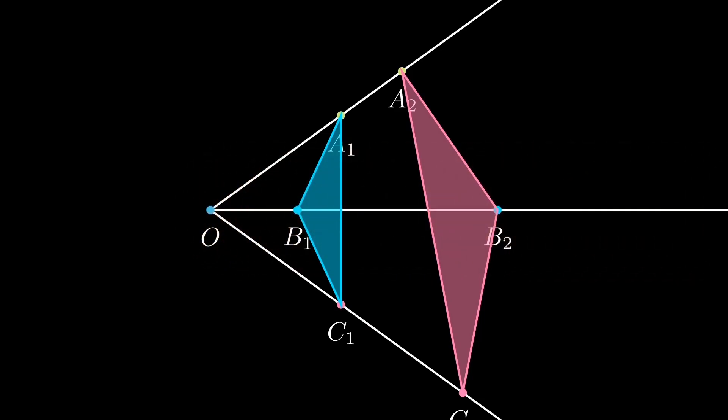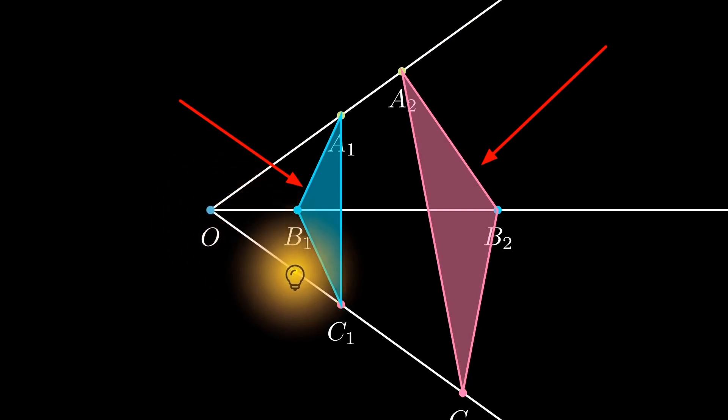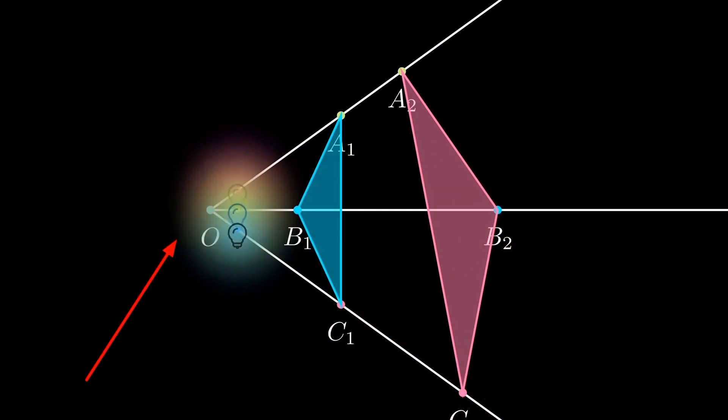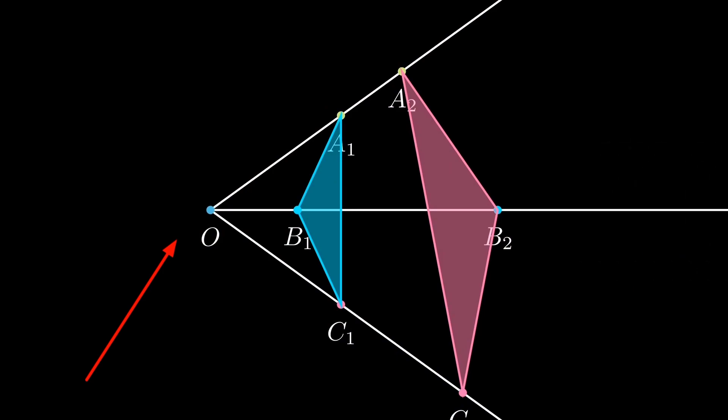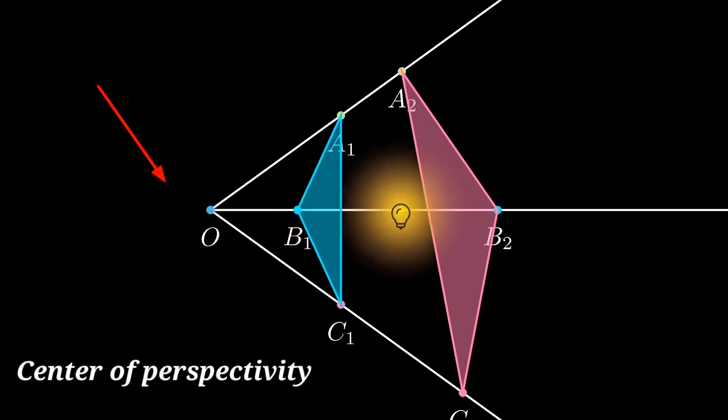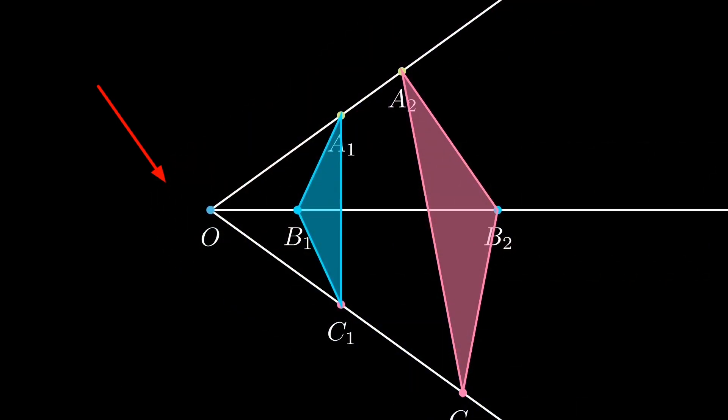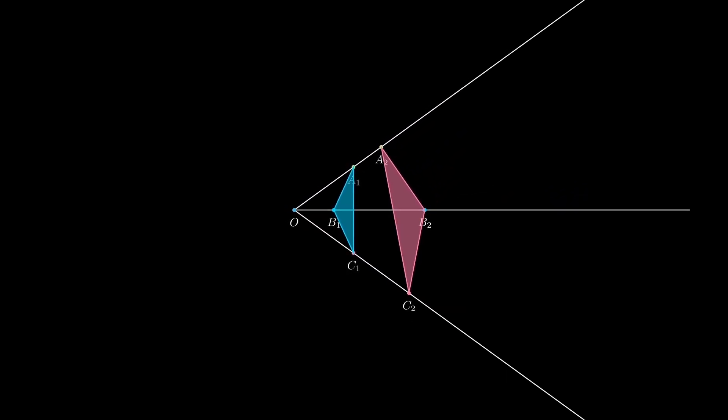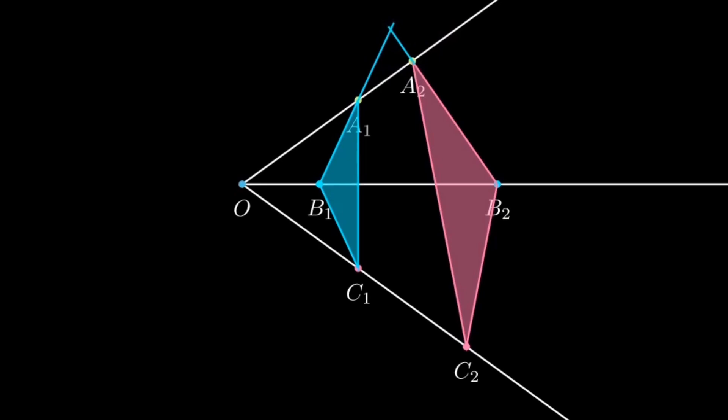Then we have a very beautiful situation which is sometimes known as a projective situation. These two triangles, the one in blue and the one in pink, they are known as perspective triangles. And the point O where all the three lines start is known as the center of perspectivity.